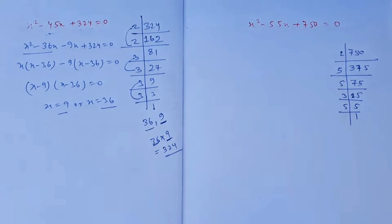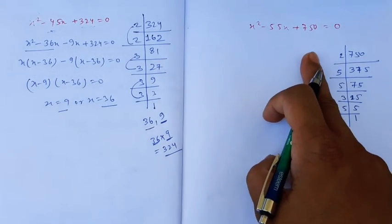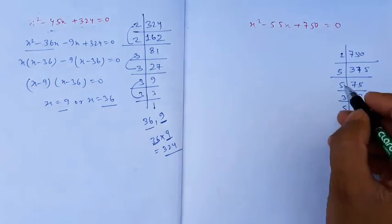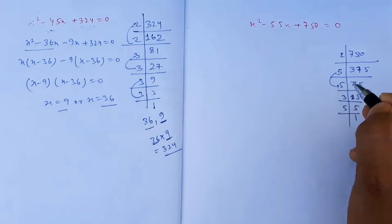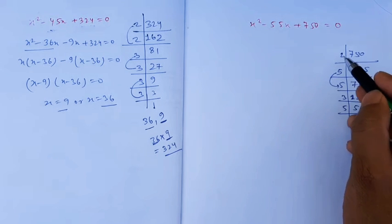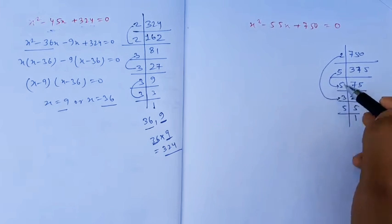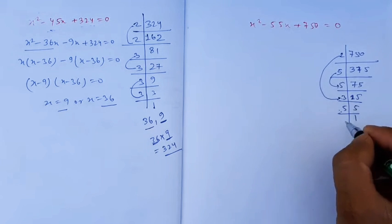We need two numbers that multiply to 750 and add to 55. We find that 30 × 25 = 750 and 30 + 25 = 55.